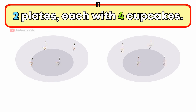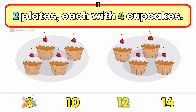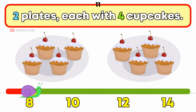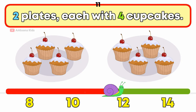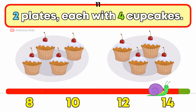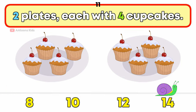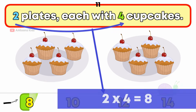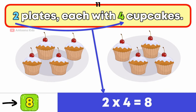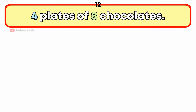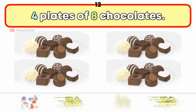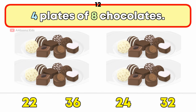2 plates each with 4 cupcakes. How many cupcakes are there in total? 8 cupcakes. 4 plates of 8 chocolates. How many chocolates are there in total? 32 chocolates.